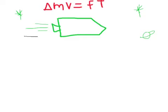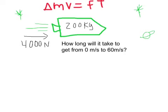So let's just say that the amount of force acting on the rocket from thrust is 4000 newtons of force, and that the rocket has a mass of 200 kilograms. And here's what we want to know. How long will it take to get from zero to 60 meters per second?